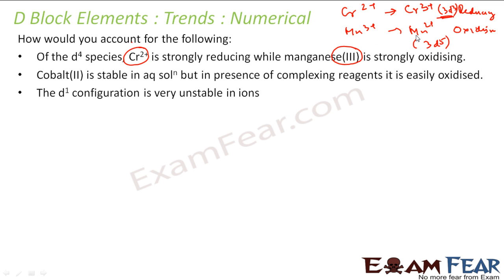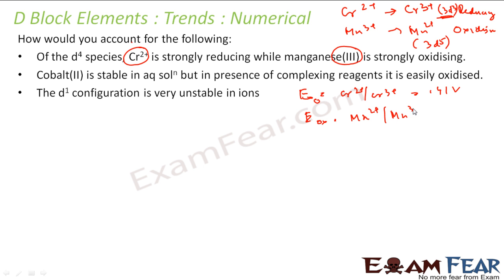We can also answer based on E° values. E° reduction of Cr²⁺ to Cr³⁺ is −0.41 V (meaning Cr²⁺ oxidizes easily), and E° reduction of Mn³⁺ to Mn²⁺ is +1.57 V (meaning Mn³⁺ reduces easily). Both values confirm that Mn³⁺ is a strong oxidizing agent and Cr²⁺ is a strong reducing agent.